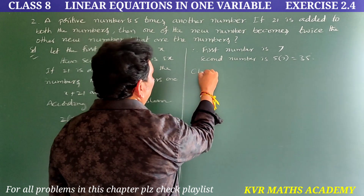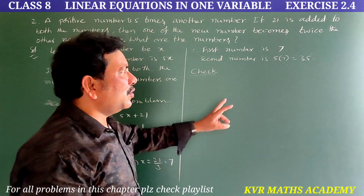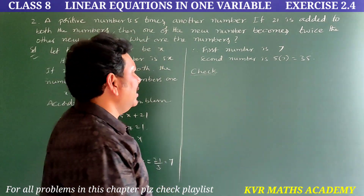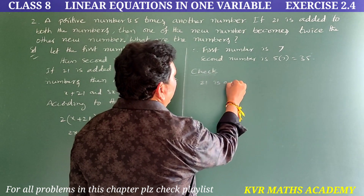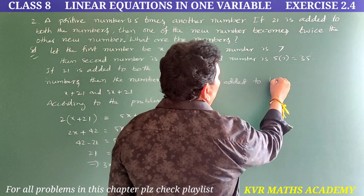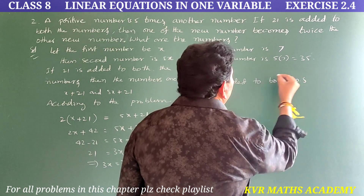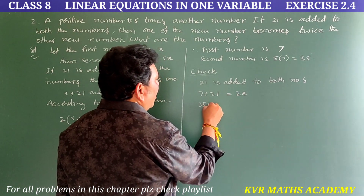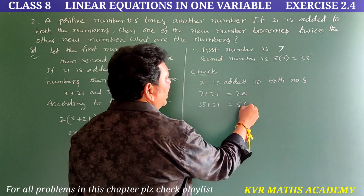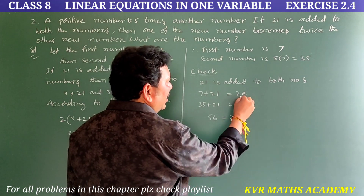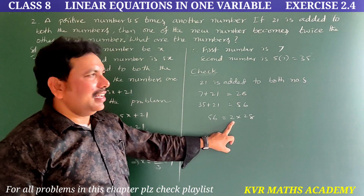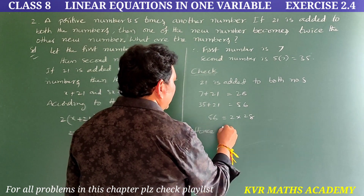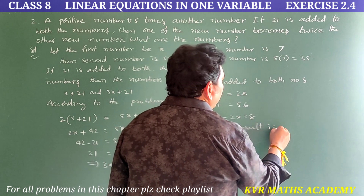Let us check. If 21 is added to both numbers: 7 + 21 = 28 and 35 + 21 = 56. Is 56 equal to 2 × 28? Yes. Hence the result is true.